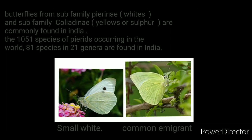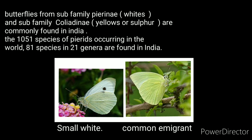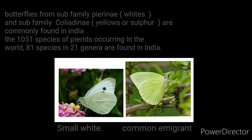Butterflies from sub-family Pierinae, called whites, and sub-family Coliadinae, called yellows or sulphurs, are commonly found in India. Of the 1,051 species of Pieridae occurring in the world, 81 species in 21 genera are found in India.